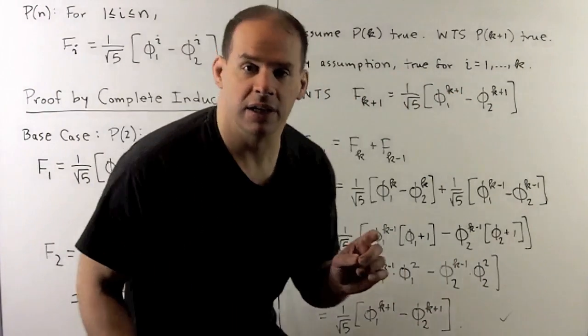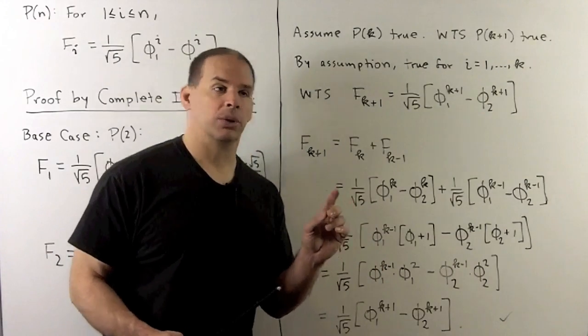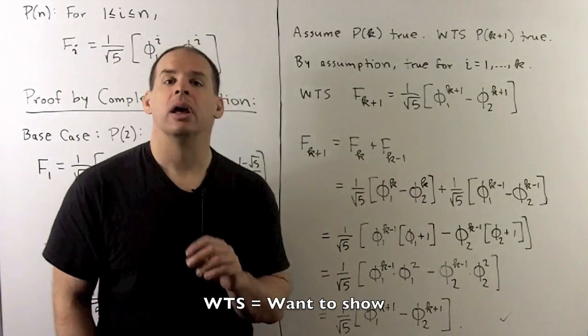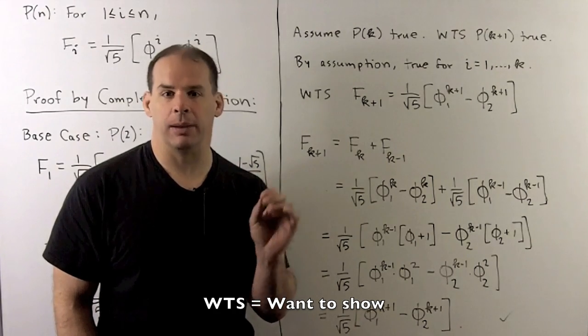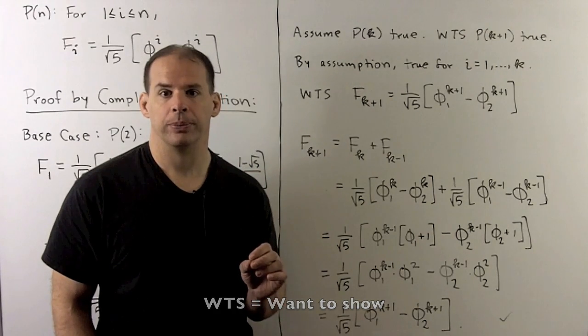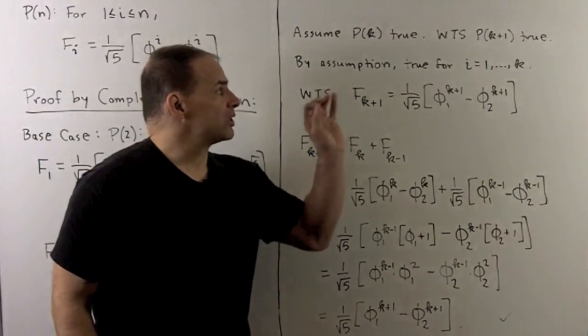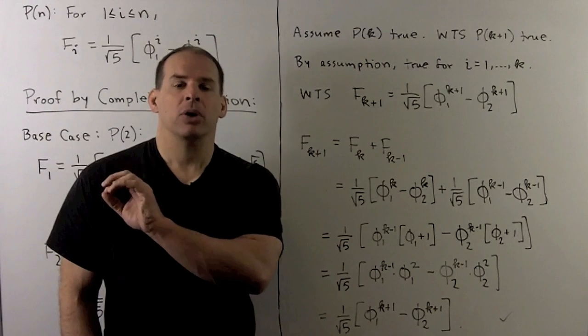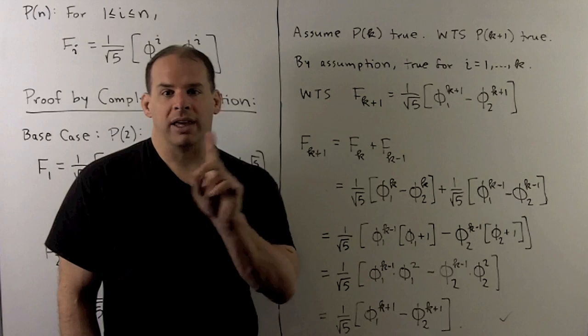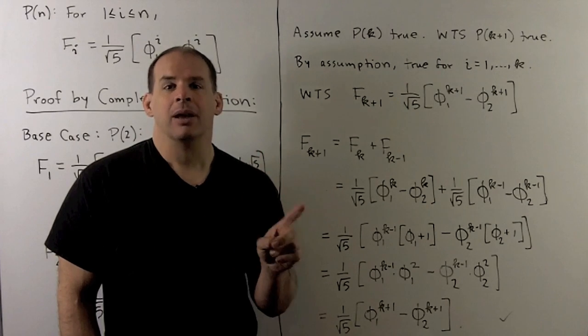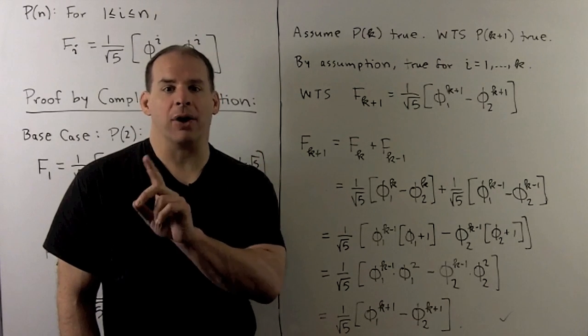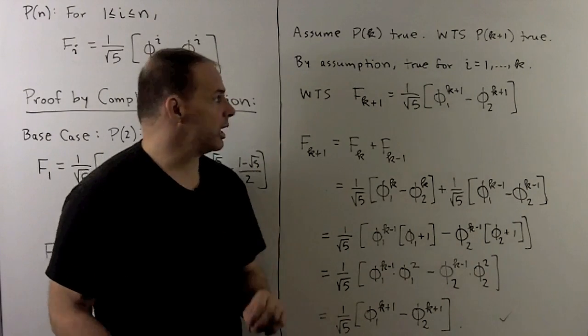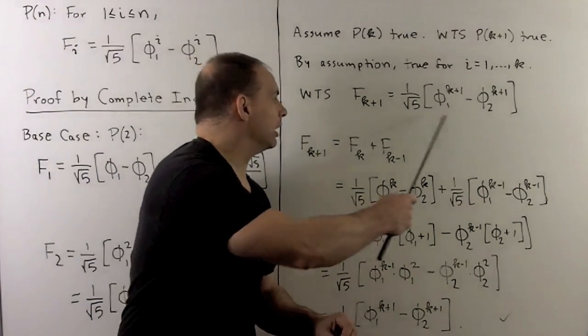We move on to the induction step. So, here I'm going to assume statement pk is true. And we're going to use that to show that statement pk plus 1 is true. Now, for statement pk plus 1, we're going to have to show the Binet formula for all i going from 1 to k plus 1. By assumption, we have it for i going from 1 to k. So, the focus is on statement pk plus 1.